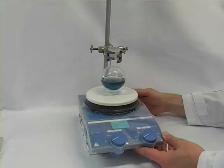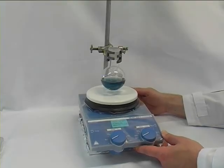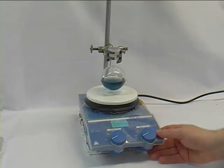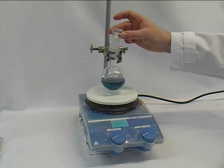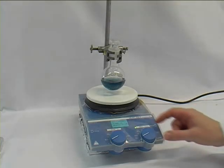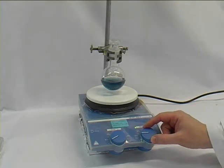So before we switch the magnetic stirrer on, we have to center it properly. Switch it on at the right side, which is for the stirring. And then stop it before we adjust the speed of the stirring.